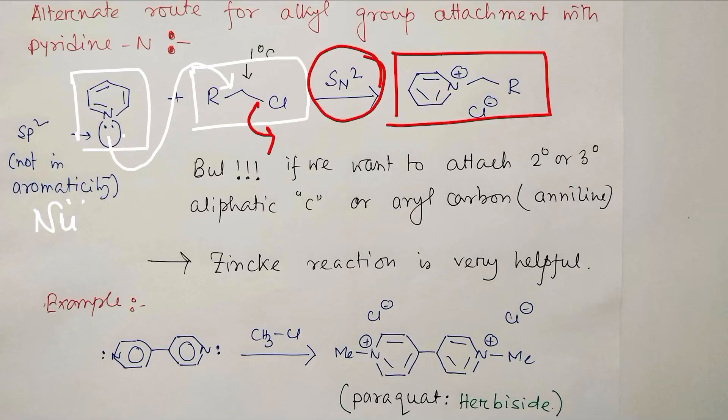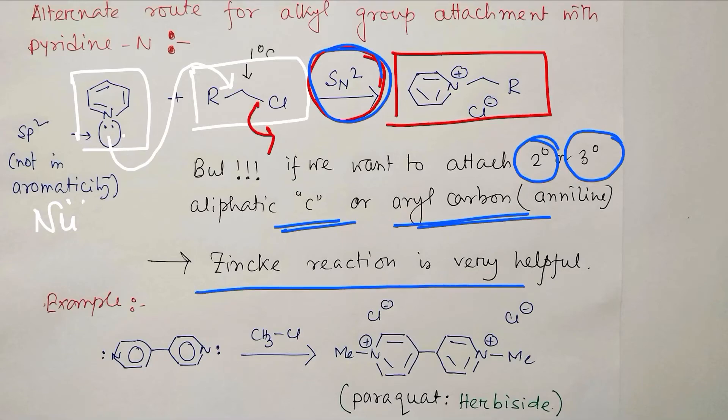But the problem of this process is that if you want to attach the secondary or tertiary aliphatic carbon or aryl carbon, aryl, leave the aliphatic carbon, not possible. Because SN2 is only good for primary. In secondary, somewhat, but tertiary, SN2 reaction not possible. So the Zincke reaction is very helpful because it is generalized. It is generalized for primary, secondary, tertiary, even aryl. So for aliphatic and aromatic, both could be achieved using Zincke reaction. That is the importance of this reaction.